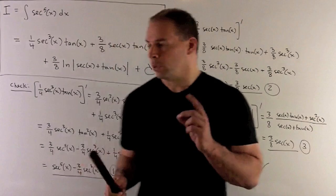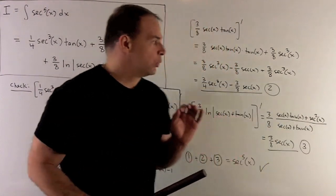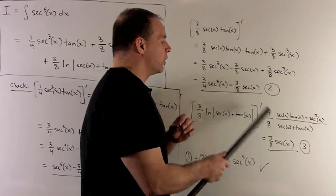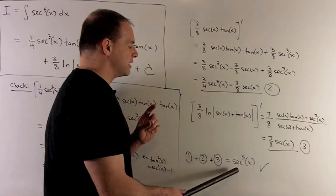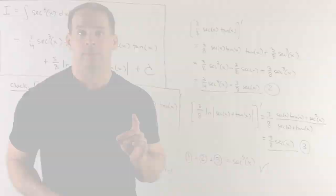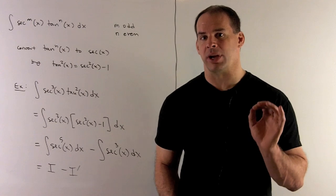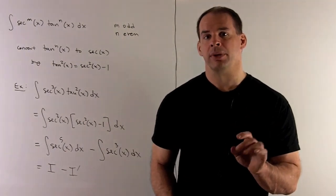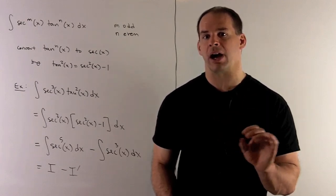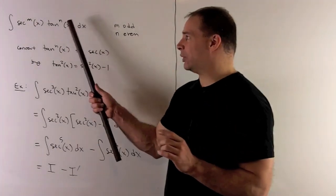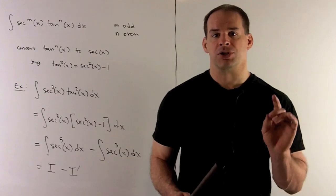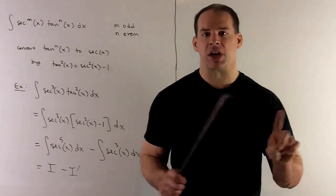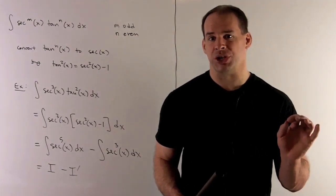Adding terms one, two, and three: we have secant to the fifth minus three-fourths secant cubed from term one; three-fourths secant cubed from term two — they cancel. Then minus three-eighths secant from term two and plus three-eighths secant from term three — they cancel too. What remains is secant to the fifth, so our work checks out. With this procedure for computing the antiderivative of secant to an odd power, we can also do secant to an odd power times tangent to an even power by eliminating all tangents using tan squared equals secant squared minus one. Since the tangent power is even, it eliminates completely, leaving a sum of odd powers of secant.